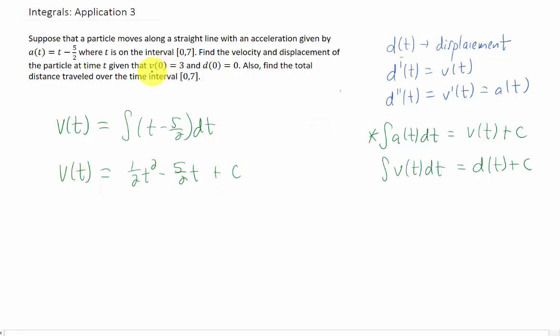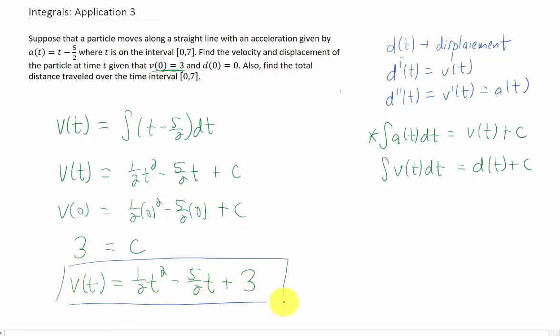Now notice that we're given this extra piece of information here that the velocity at time 0 is 3. Well, that just means if we plug in 0 into this function, the function gives us a value of c, but the problem tells us that that velocity needs to be 3. So what we just found was that our value of c equals 3, and that means that v(t) is then 1 half t squared minus 5 halves t plus 3. Okay, that's very good. We'll box that thing up.